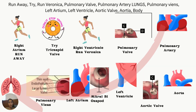My mnemonic uses my sister Veronica's name. 'Run away, Try, run Veronica' helps me remember the right side first. Then I continue: pulmonary valve, pulmonary artery, lungs, pulmonary veins, left atrium, left ventricle, aortic valve, aorta, body. So right atrium — run away; tricuspid valve — try; right ventricle — run Veronica; then pulmonary valve.